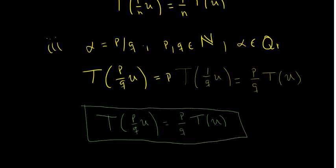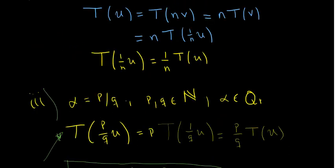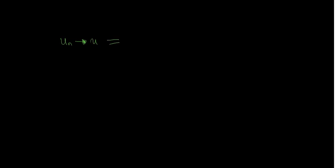We are now going to use the fact that operator T is sequentially continuous. What do we mean by sequential continuity? We mean that whenever a sequence u_n tends to u as n tends to infinity, we have that T(u_n) tends to T(u). This is the definition of sequential continuity we will use.